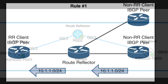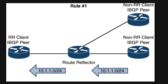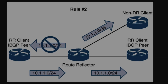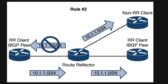Rule number 1: if a route reflector receives a prefix from a non-route reflector client, the route reflector advertises the prefix to a route reflector client, and it does not advertise the prefix to a non-route reflector client. Rule number 2: if a route reflector receives a prefix from a route reflector client, it advertises the prefix to client and non-client devices. Even a route reflector client that advertised the prefix will receive a copy of the route, but it discards the prefix because it sees itself as the route originator.